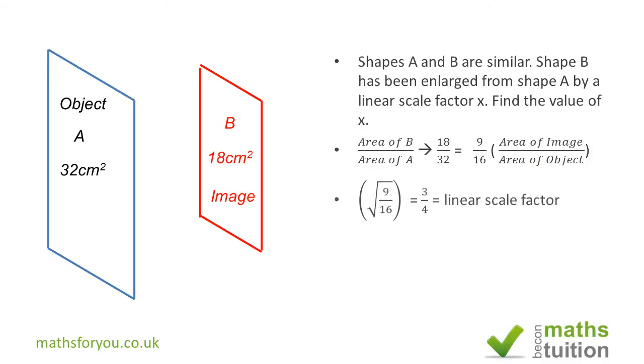And so if we take the square root of 9 over 16, we end up with 3 quarters. So the linear scale factor from object A after transformation by enlargement is 3 over 4.